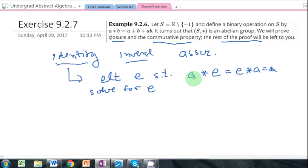So how does that work? A star E, well we have the expression for A star E up here. A star E will be A plus E plus AE. And that has to be equal to A according to this identity condition, right? Because that's what this says, A star E is equal to A. Alright, so we just solve for E.